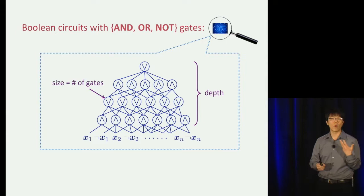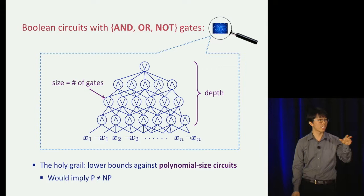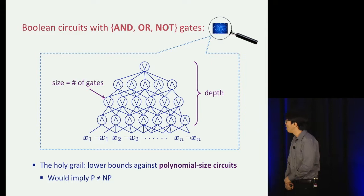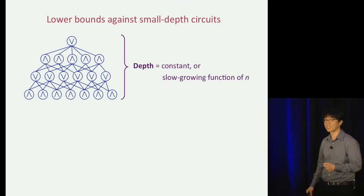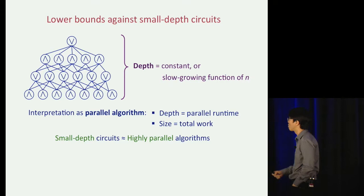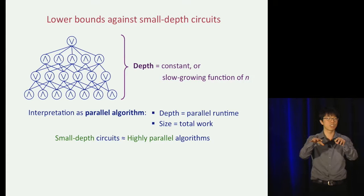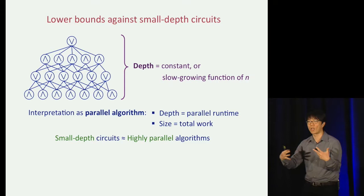The holy grail in circuit complexity is to prove lower bounds against the class of all polynomial-size circuits, which correspond to polynomial-time algorithms. We are still very far from this goal — proving this would imply P different from NP. But we have had a lot of success understanding small-depth circuits, which are circuits where depth is an absolute constant like 10 or 100 or a slow-growing function of n. Small-depth circuits are interesting because we can view them as a model for parallel algorithms.